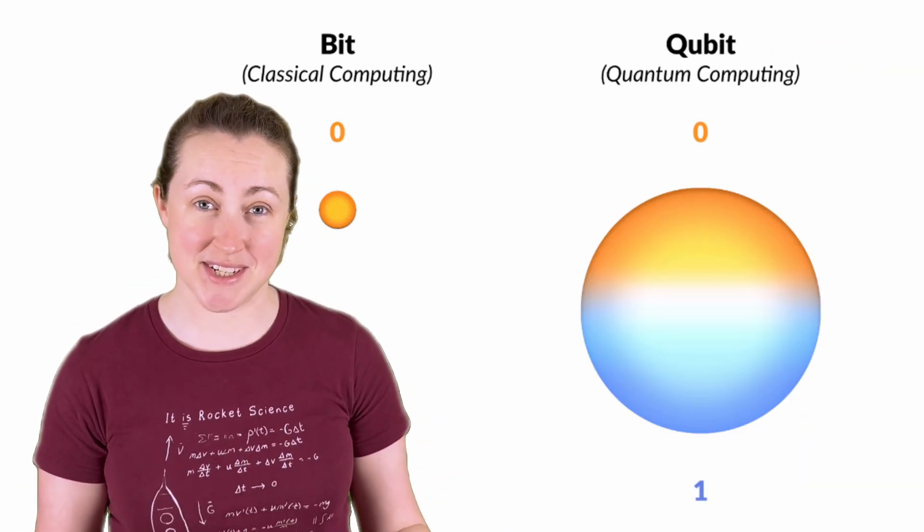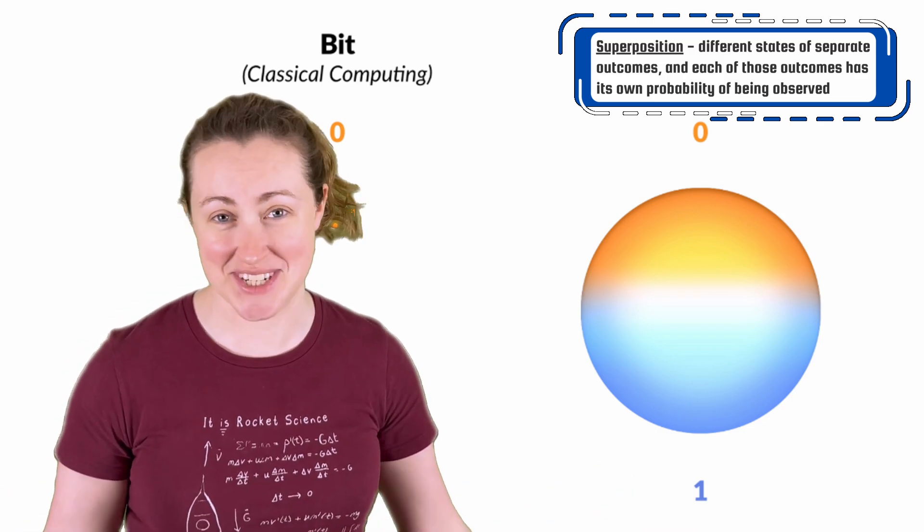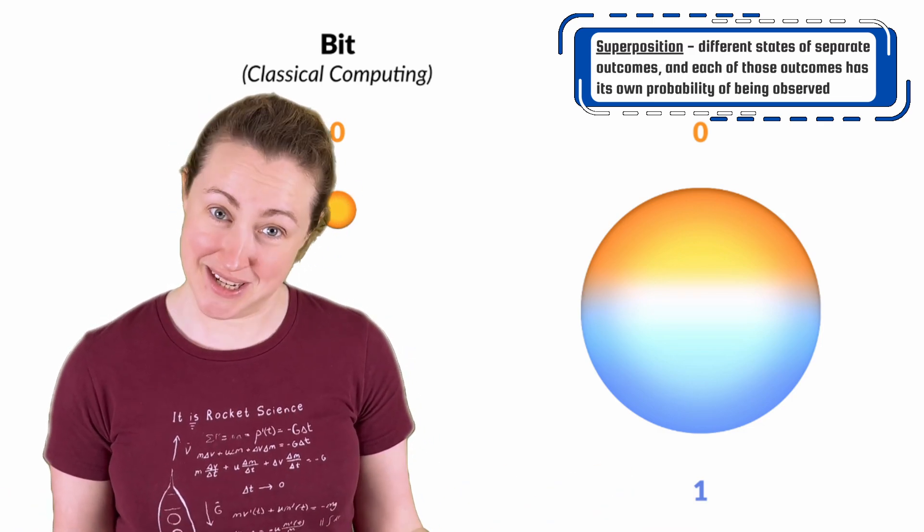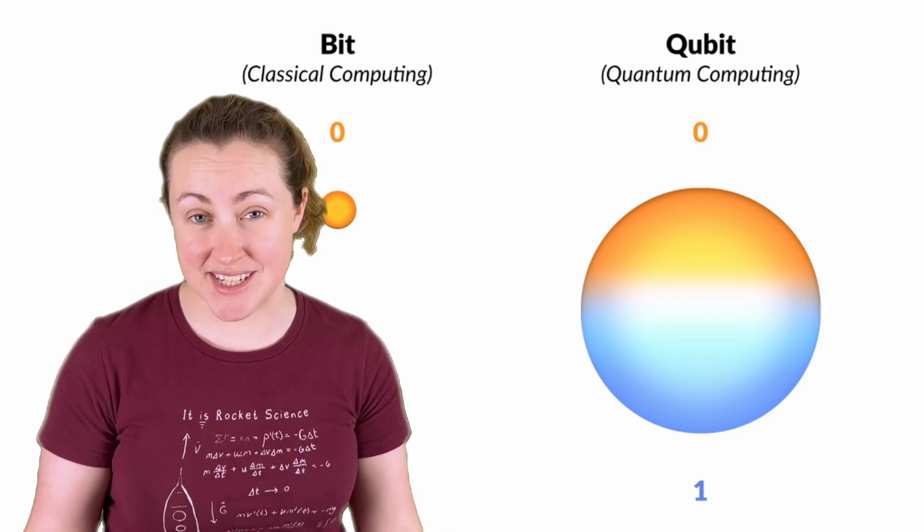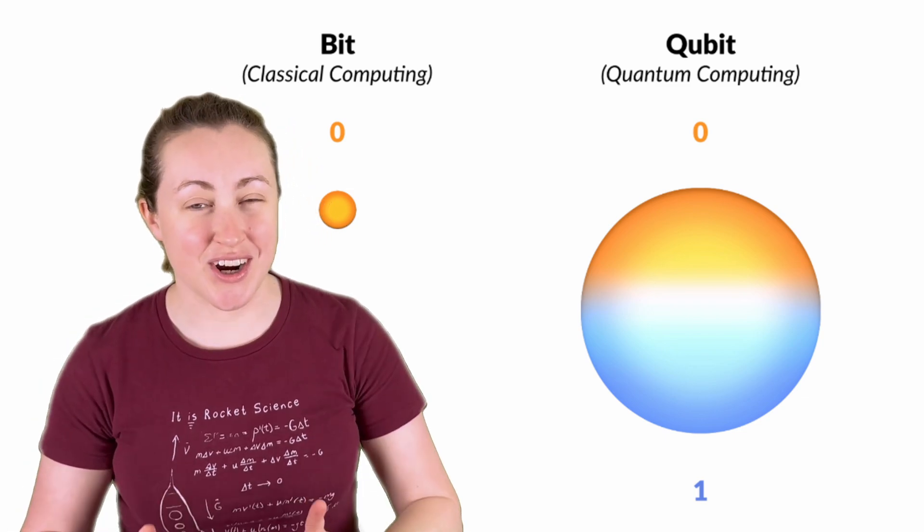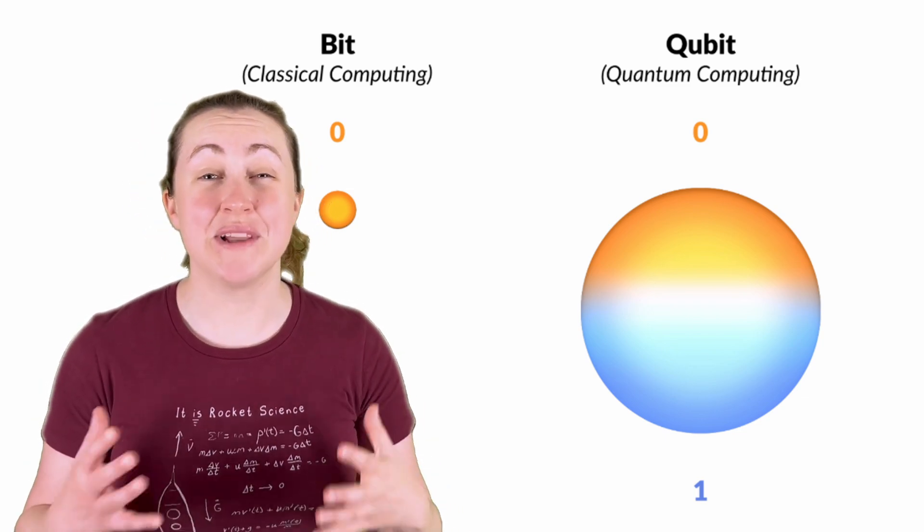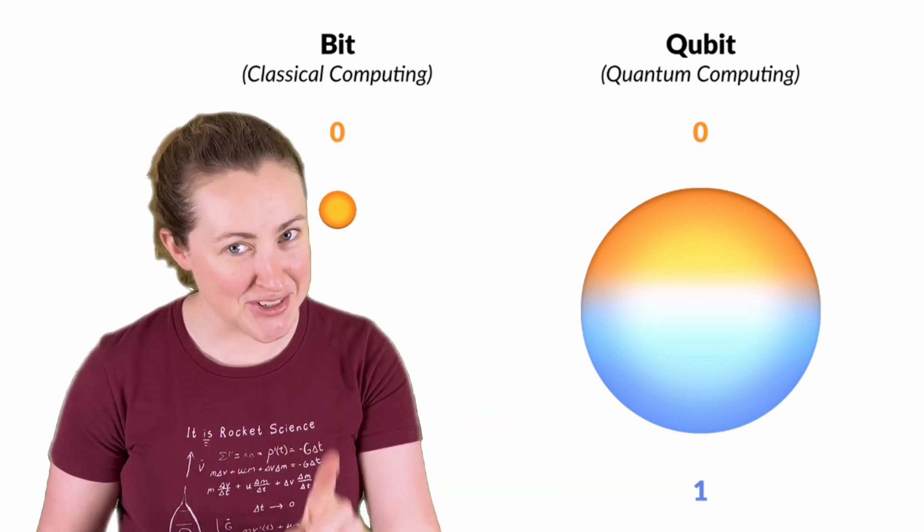Superposition is a quantum state represented as the sum of two or more states. It sounds like a math problem, because it is. Basically, it's being in multiple states at the same time. In regard to quantum computers, it's a blend between 1 and 0, until measured.